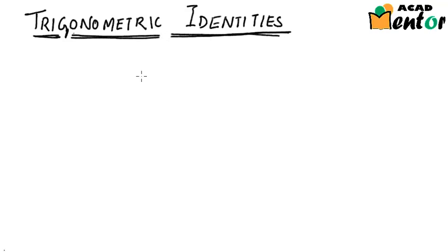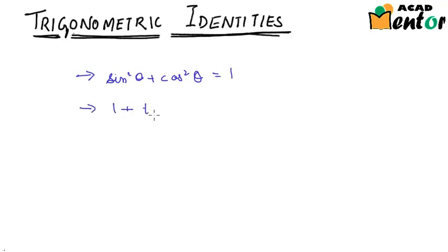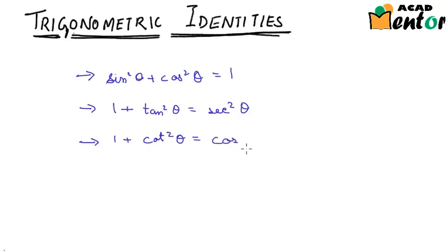Hi guys. We were talking about trigonometric identities in the previous videos. We saw three trigonometric identities: the first one being sin²θ + cos²θ = 1, the second one being 1 + tan²θ = sec²θ, and the third one being 1 + cot²θ = cosec²θ. These are very useful identities, valid for all values of theta. They are interrelated and one can be derived from the other.